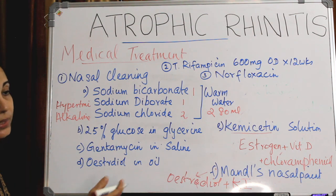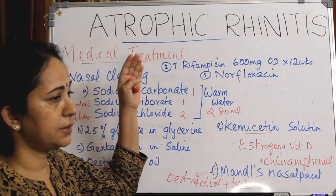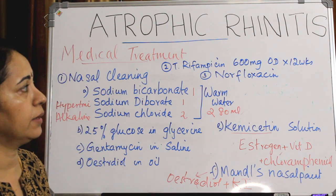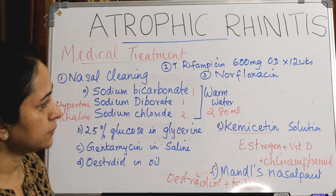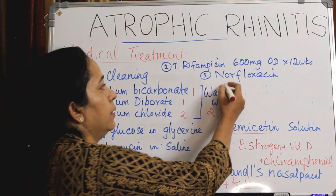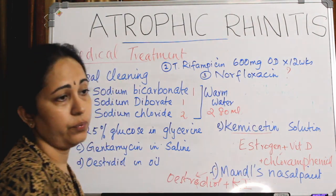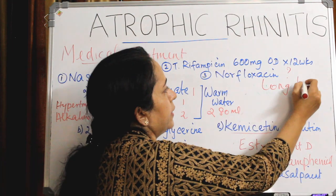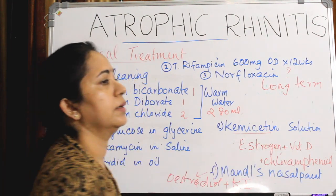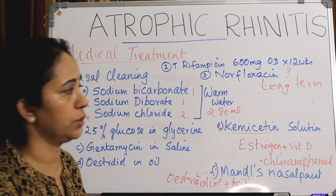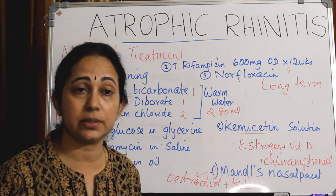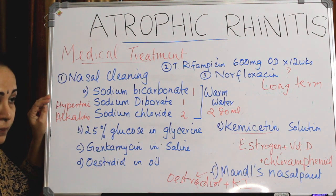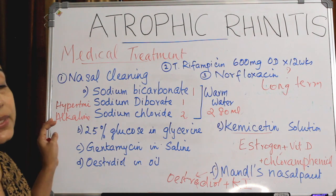The drugs given orally are usually rifampicin 600 mg per day for a period of 12 weeks. Recent evidence also shows norfloxacin given long-term, with many studies pointing towards it. Rifampicin and norfloxacin are the two drugs usually asked in MCQs that can be given in atrophic rhinitis.